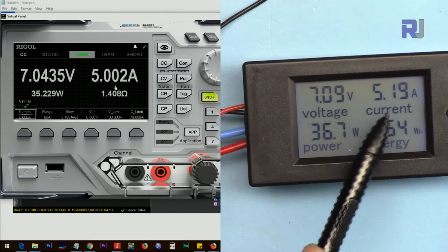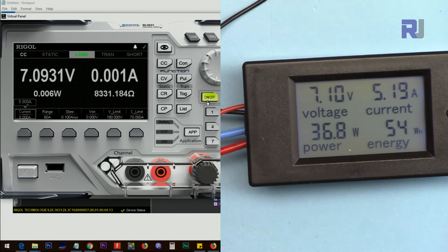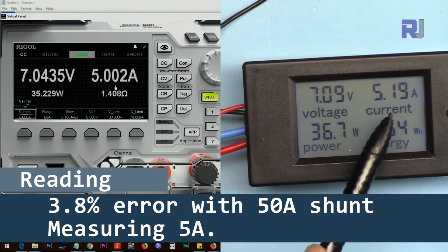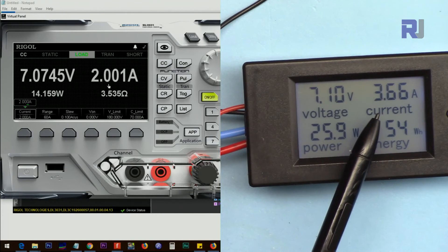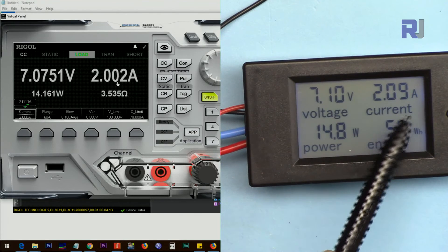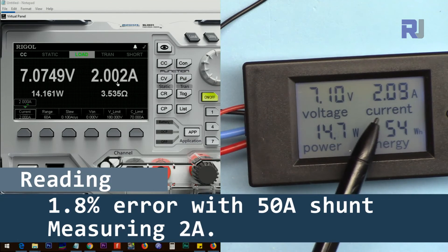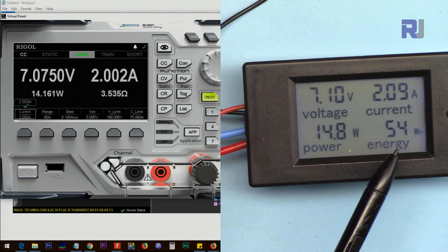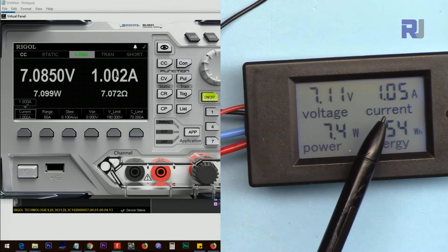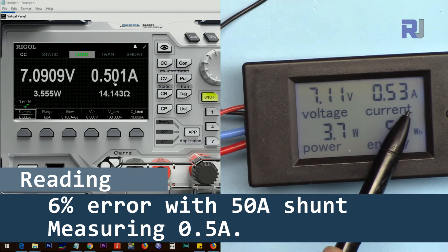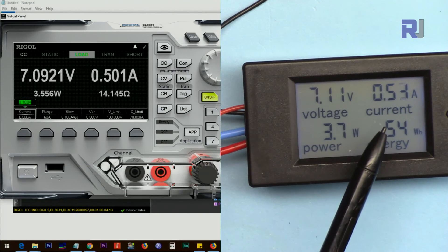Now this is 5 amp, 5.12 ampere. Now let's go for 2 amp: 2.09, still 90 milliampere difference. 1 amp: 1.05, 50 milliampere difference. Let's go 0.5. Now we are at 0.5, 30 milliampere difference. Now let's go to 0.1 to see if it can display.